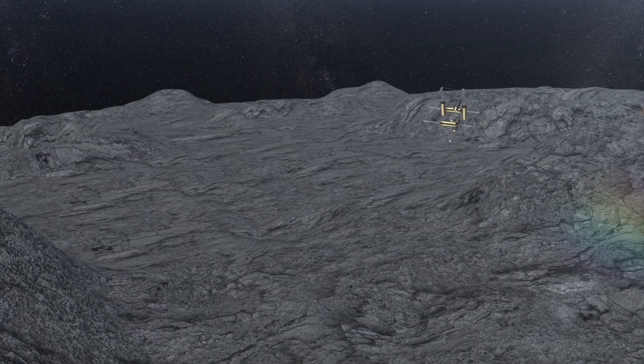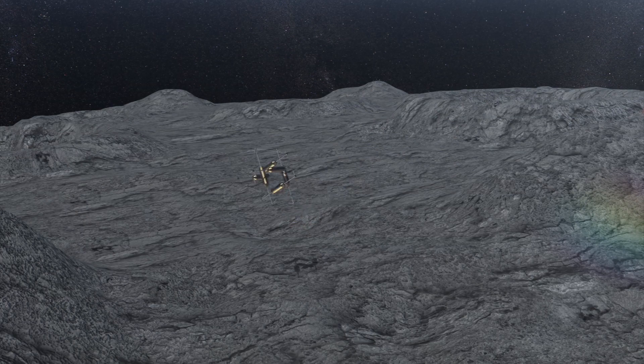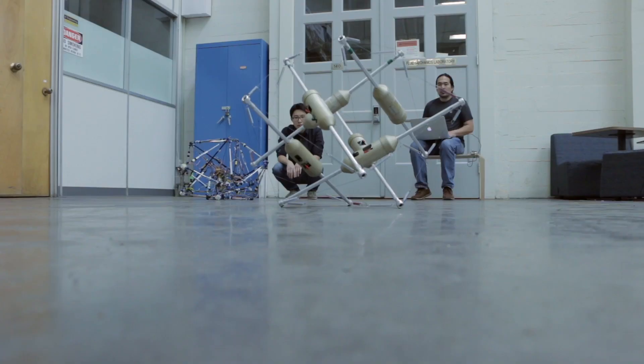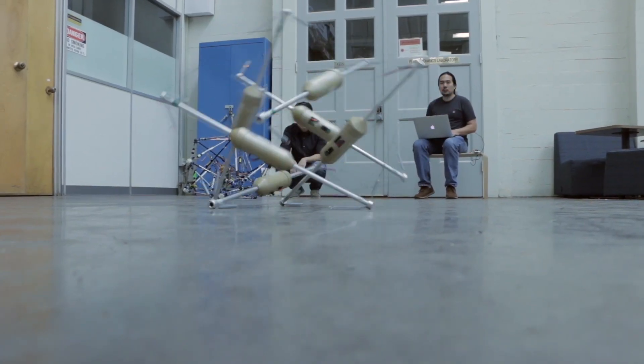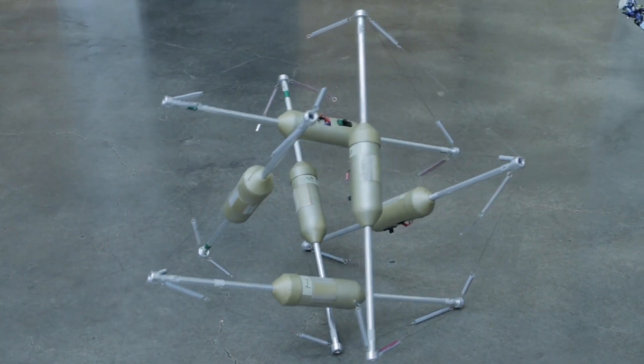In addition to space exploration, researchers are also finding ways to use these robots on Earth. We're also exploring applications where in fact the aircraft itself might be a tensegrity that can fly through the air, drop on the ground and actually conduct some kind of search and rescue or delivery of emergency supplies.